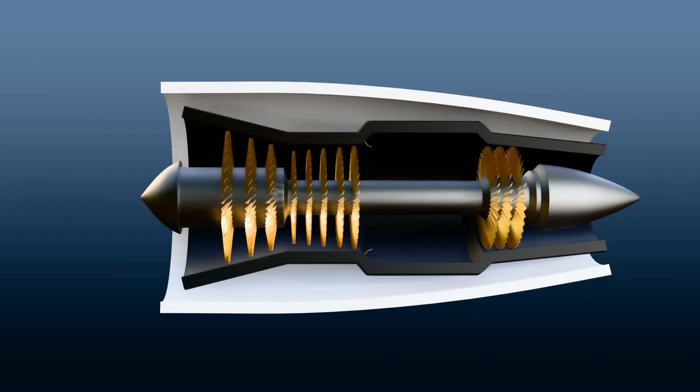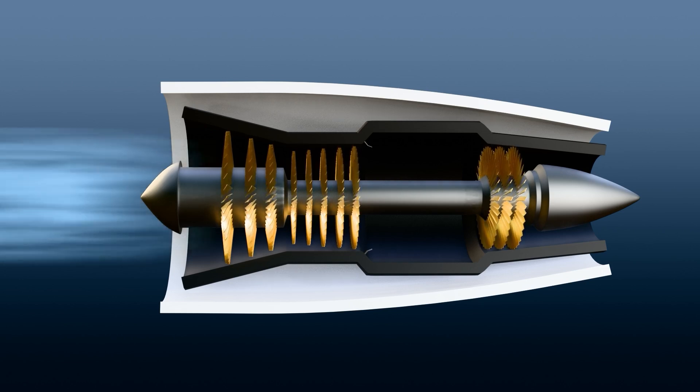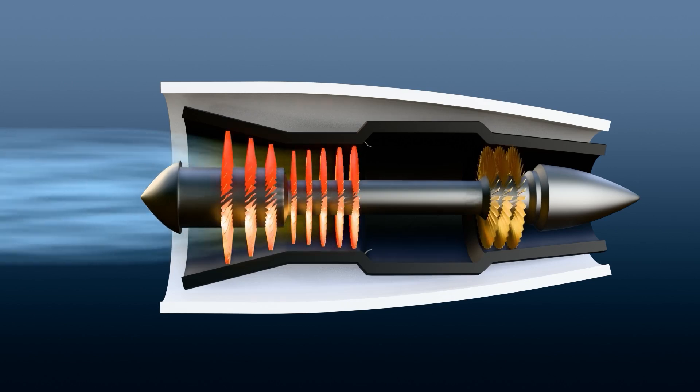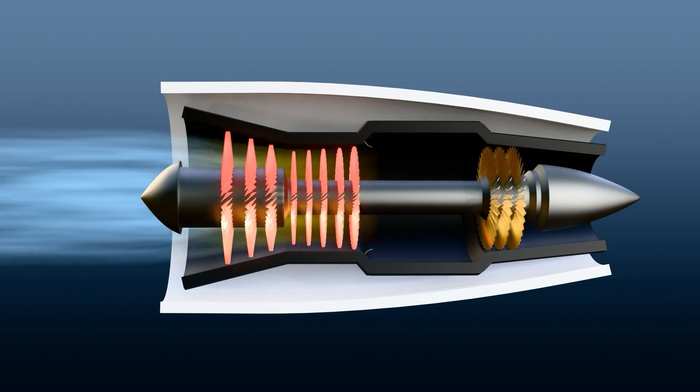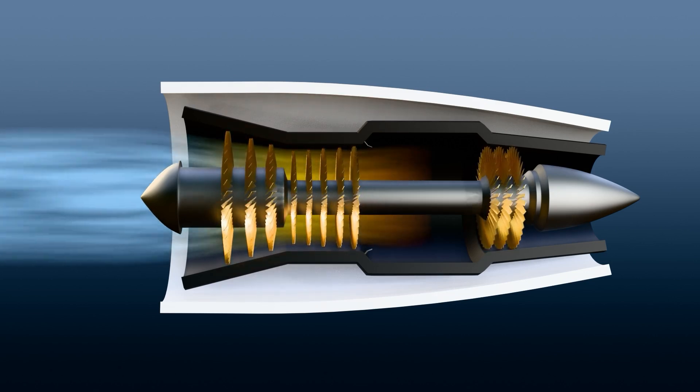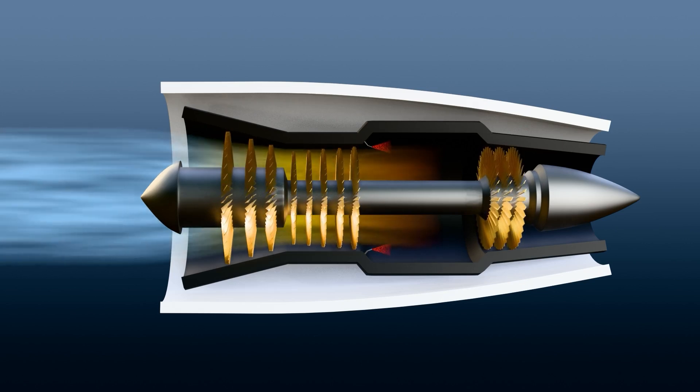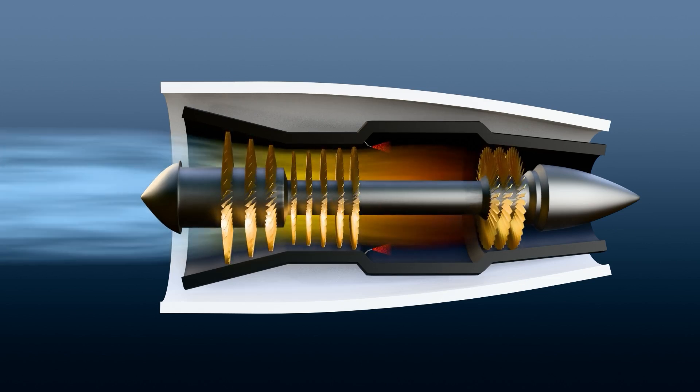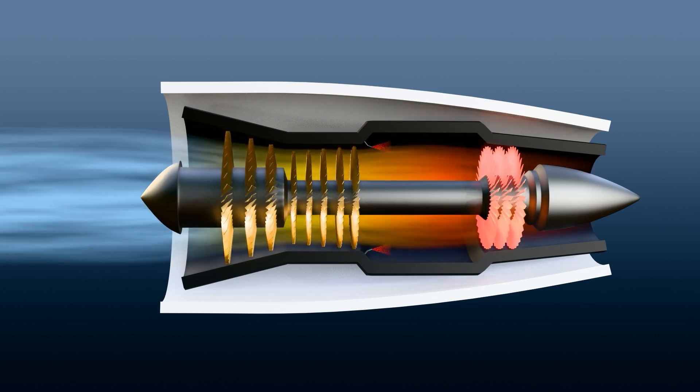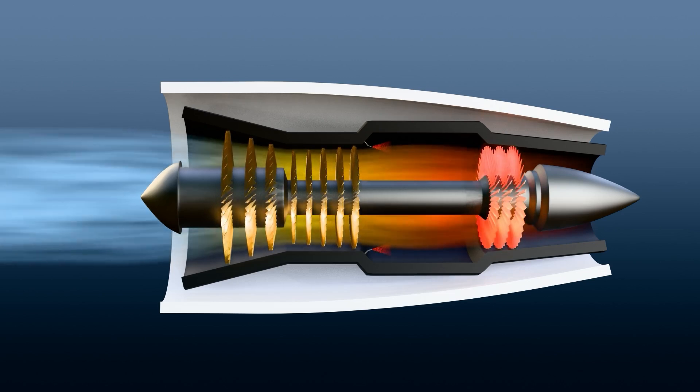A turbojet engine works like a turbofan engine, but it does not have a fan at the front. It starts by drawing air into the engine through an inlet. The air then goes into a compressor, which squeezes it to a higher pressure. Next, the compressed air enters the combustion chamber, where it mixes with the fuel and is ignited. This creates hot gases that expand quickly. These gases flow through turbines, which are connected to the compressor and help keep it running.